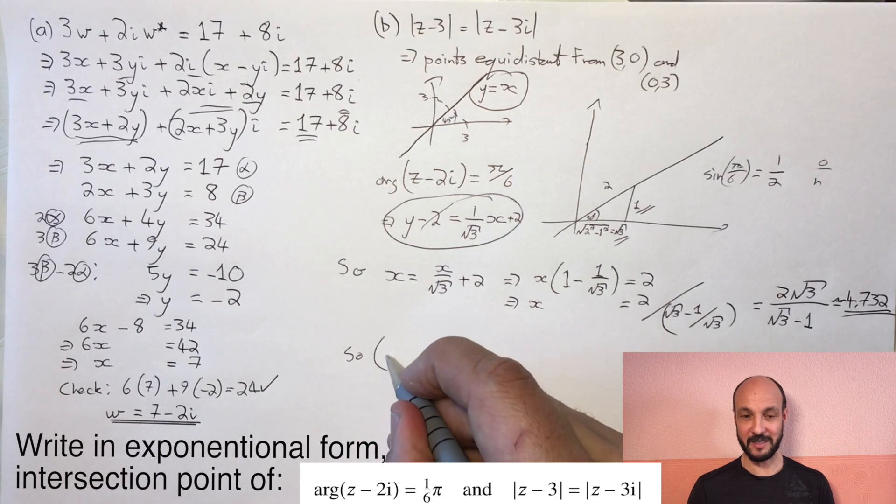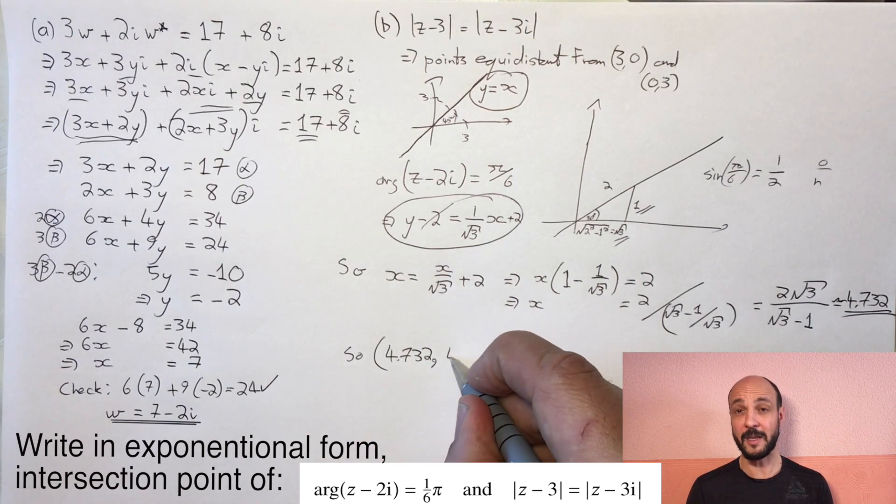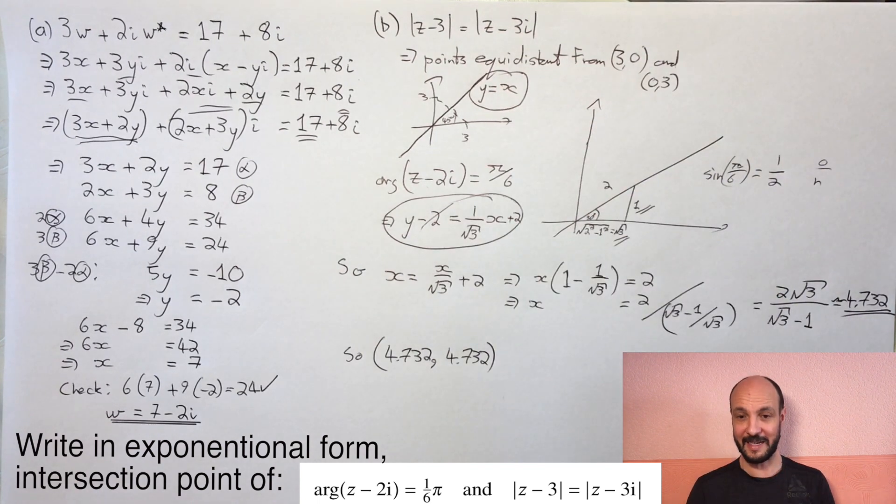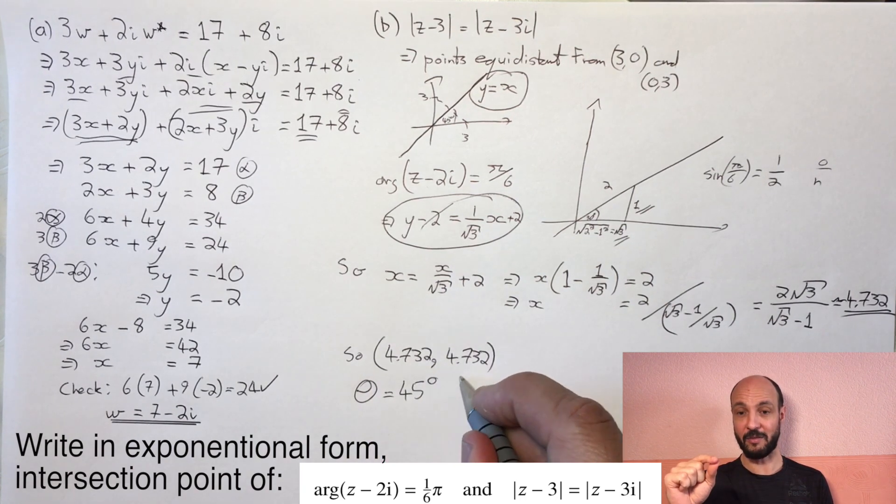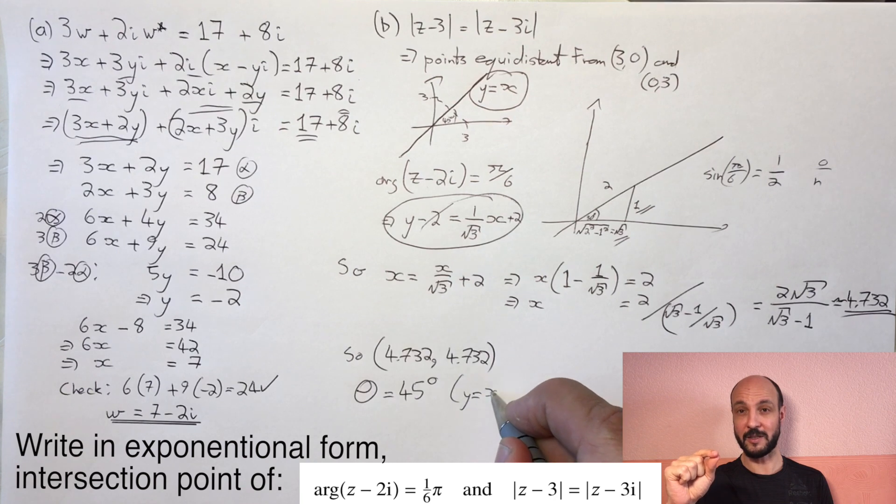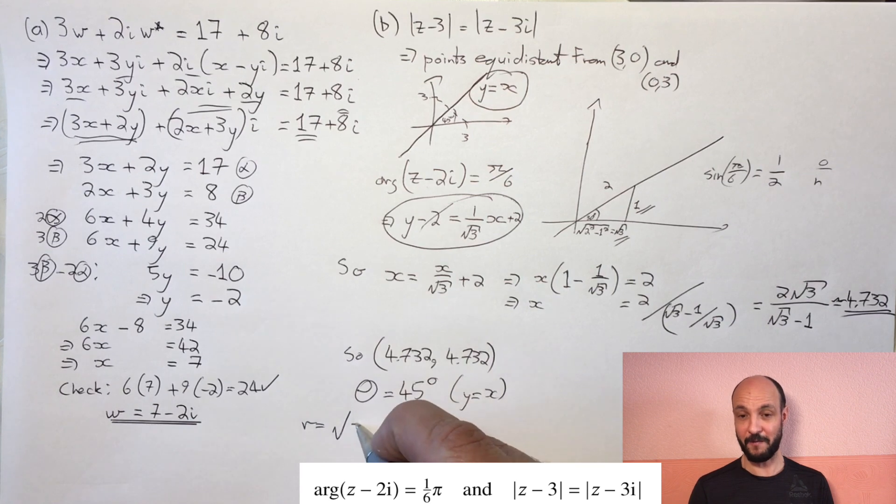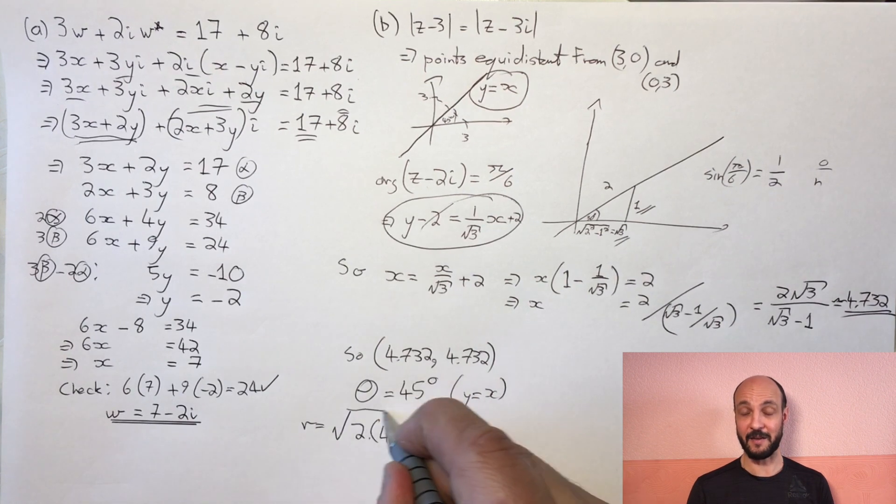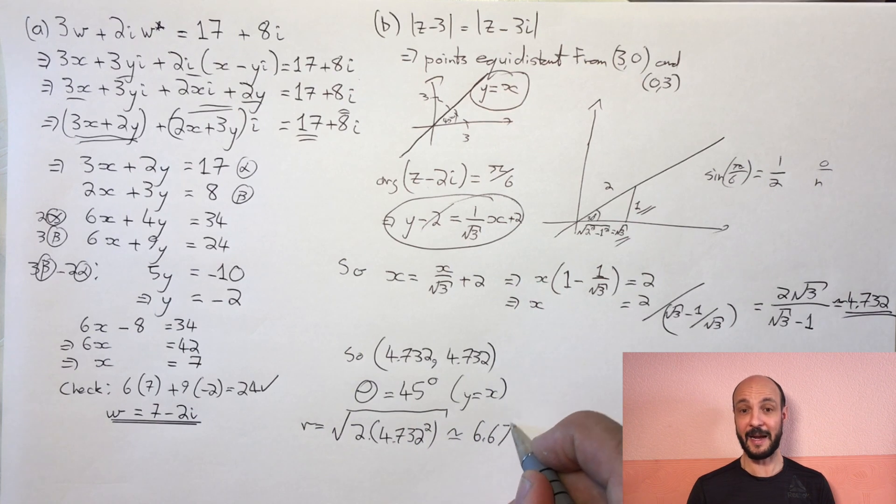So then our last part of our question, we need our r e to the i theta. Now we know theta is 45 degrees, or pi over 4, because we're on our y equals x line. To find out r, we take the magnitude of the point 4.732, 4.732, which we can use Pythagoras' theorem, so the square root of 2 times by 4.732 squared. So to 3 significant figures, that's 6.69, so we can write our final answer as 6.69 e to the pi i over 4.